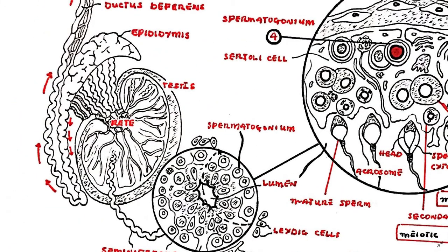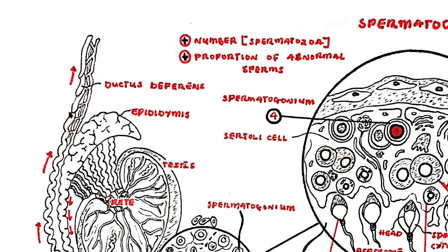The spermatozoa are passed in an inactive state to the epididymis where they continue to mature during the next six or seven days. They descend within the epididymis and become motile and ready to be passed into the ductus deferens during ejaculation.